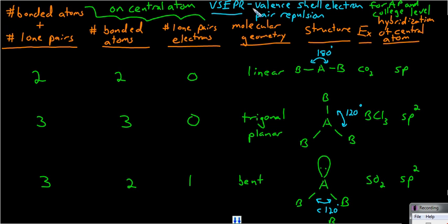VSEPR theory, valence shell electron pair repulsion theory, says that around the central atom, the bonds of the valence electrons towards other atoms, or also the lone pairs of electrons on the central atom, they have relatively negative charges, and all being negative, they will repel each other.